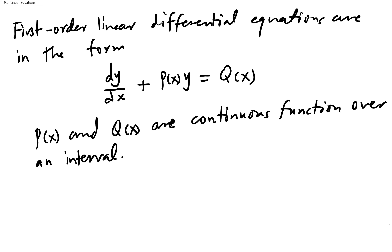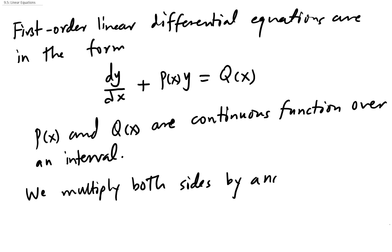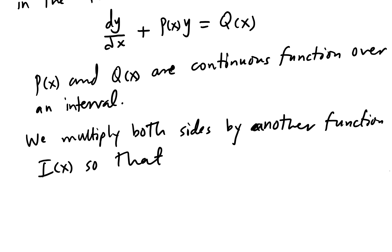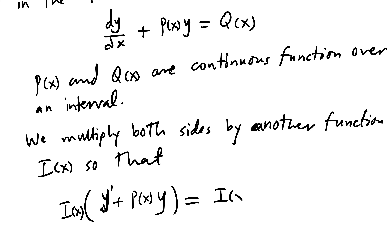To go about this, we multiply both sides by another function — we call it i(x) — so that when I multiply the left side, which is y' + P(x)·y, by i(x), I want the right-hand side to be the derivative of the product of i(x) and y. The reason is that when I integrate both sides, the integral will drop the derivative.